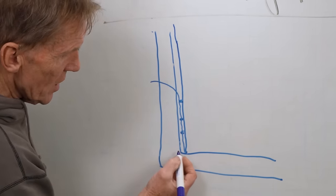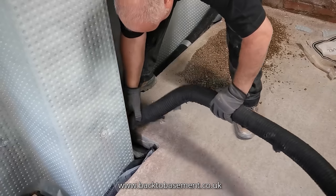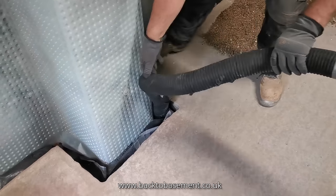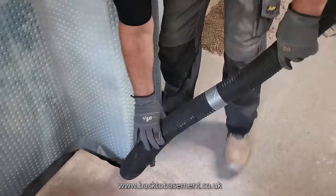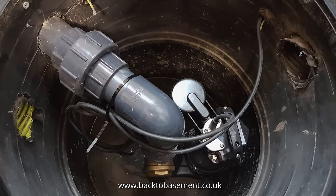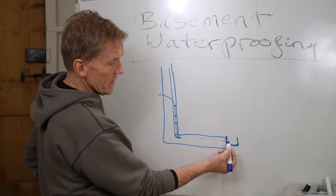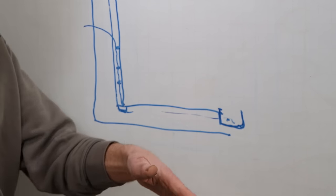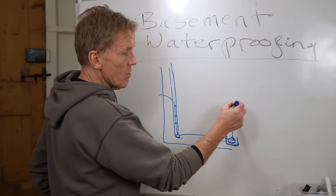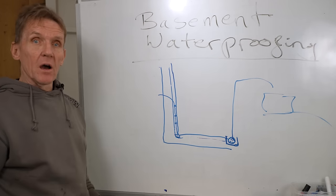Because what we then need to do is we need to put a perimeter drain in all the way around the bottom of the basement, all the way around the floor. And that perimeter drain will take that water away to a waterproof chamber below the floor level. In this chamber, we have a pump and that pump triggers when that water starts running in there. A float switch detects that the water is filling up. The pump will kick in, it will throw the water out into some kind of drain and away it goes.